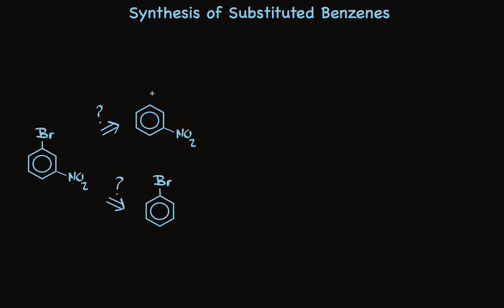The nitro group is a meta-director, so it's directing to this position and this position. Since these are equivalent, this looks like a precursor that will work — I'm going to get rid of that question mark. Now let's look at bromobenzene. Bromine is directing to the ortho positions and the para position, but we need nitro at the meta position. This does not work. So of the two possible precursors that can make meta-bromonitrobenzene in one step, one works and one doesn't.